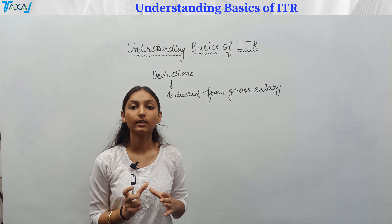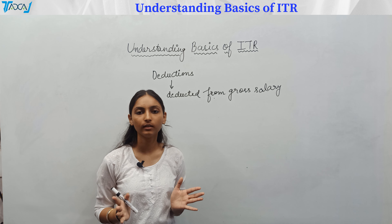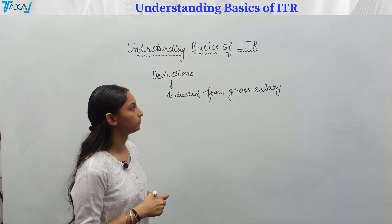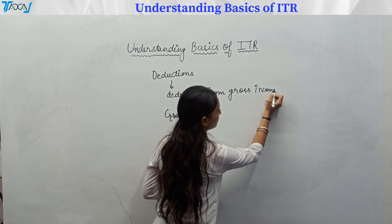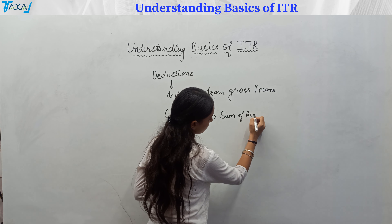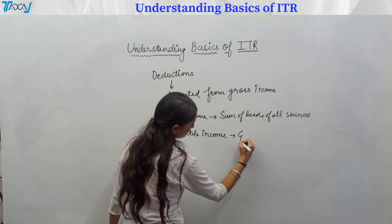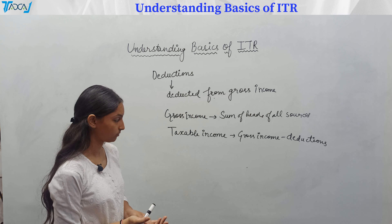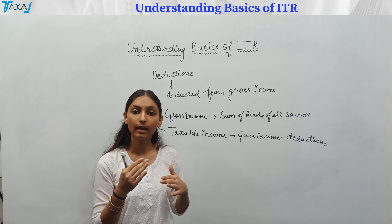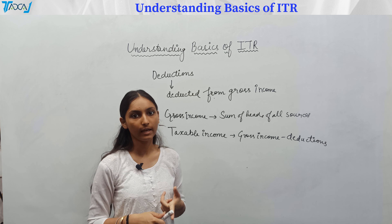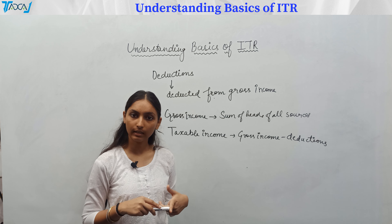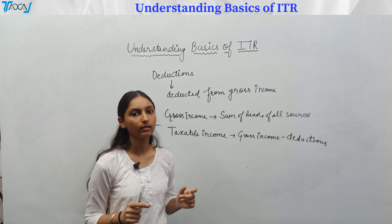Now let's talk about deductions. Deductions are the amounts which the income tax department allows us to subtract from our income. We add up all sources of income — salary, house property, capital gains, etc. — to get gross income. From gross income, we subtract allowed deductions to get taxable income, which is what we actually pay tax on.